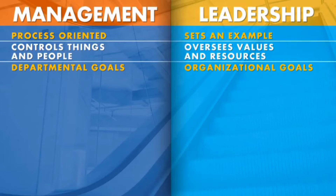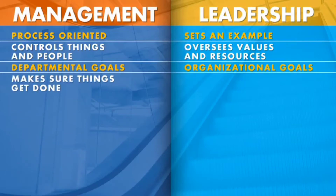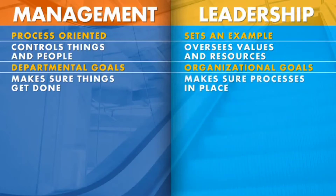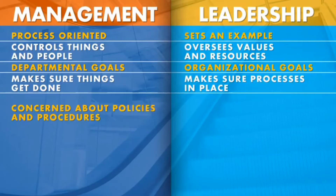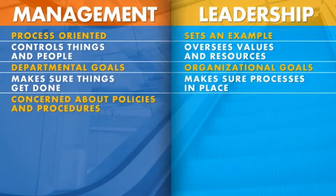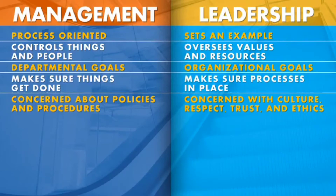They're making sure things go the way they should. Management is task-driven — they're trying to get things done. Leadership is making sure work processes are in place. Management is concerned about policies and procedures, and the specifics on how to do things. Leadership is looking at culture, respect, trust, and ethics — these are things that leaders have to establish in the organization.